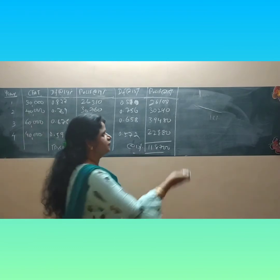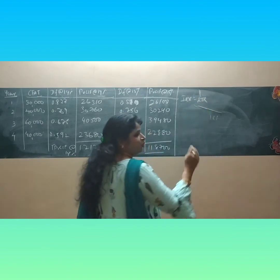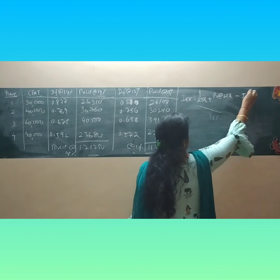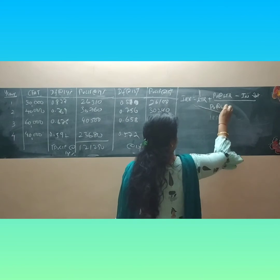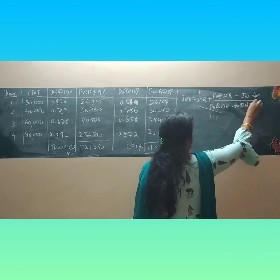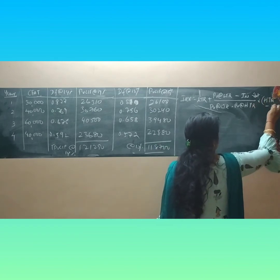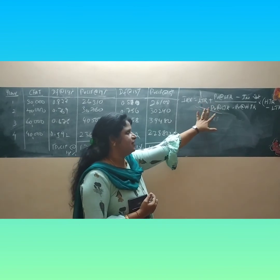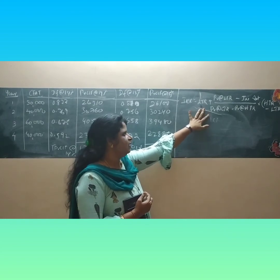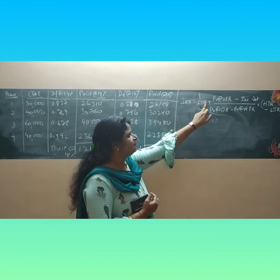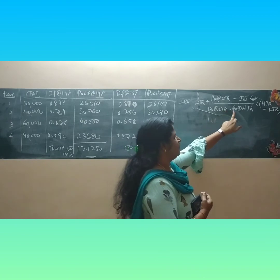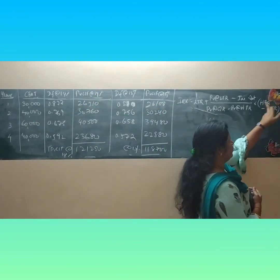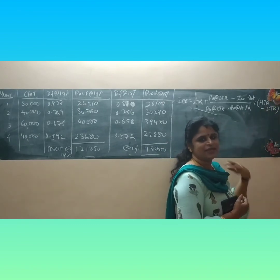Now we apply the IRR formula directly. IRR equals the lower trial rate (LTR) plus: [PV at LTR minus initial investment] divided by [PV at LTR minus PV at HTR (higher trial rate)], multiplied by the difference between HTR and LTR. This formula is straightforward and easy for students to apply. The lower trial rate is 14% and the higher trial rate is 15%.